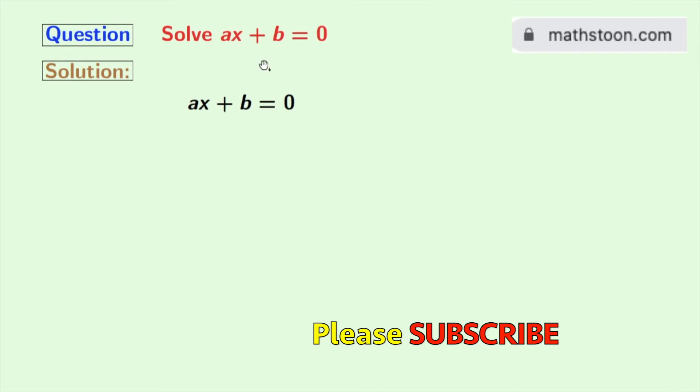Look, this is our given equation. Now to get the value of x, we will subtract b from both sides. Doing so, we get ax plus b minus b is equal to 0 minus b.